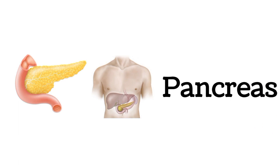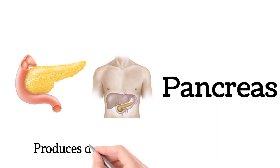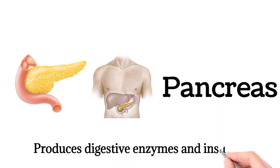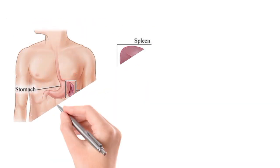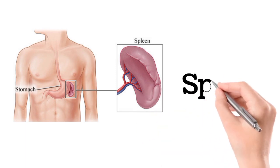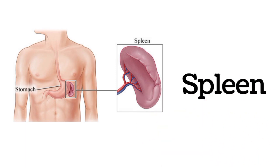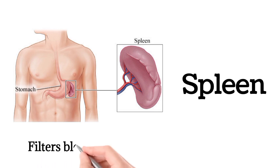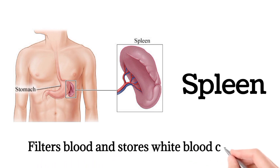Pancreas. The pancreas produces digestive enzymes and insulin. Spleen. The spleen filters blood and stores white blood cells.